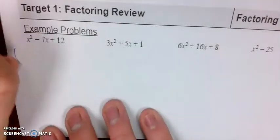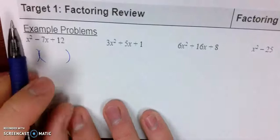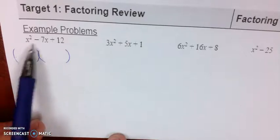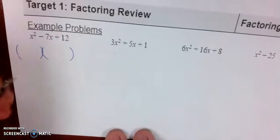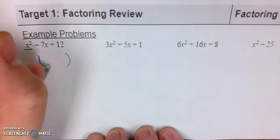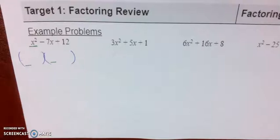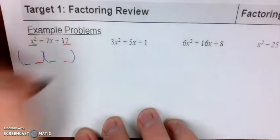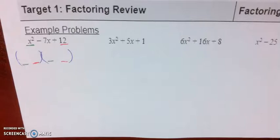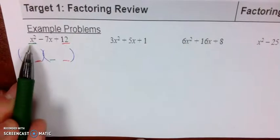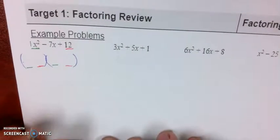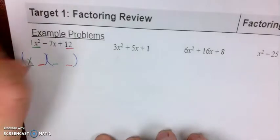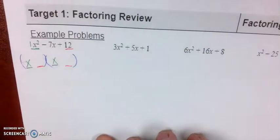When we are doing this, our goal is to undistribute this polynomial and figure out what two binomials would multiply and simplify to x squared minus 7x plus 12. My first term is going to be broken apart and split up into the first position in each parentheses group. The only way to get 1x squared would be 1x times 1x.